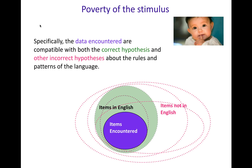Let's walk through what poverty of the stimulus is talking about. Consider these little circles as sets. You have the items that you actually encounter in your input, and then you're trying to generalize from those to figure out what are the actual set of items that are in English — not too small, and certainly not too big to include items that are not in English. And the poverty of the stimulus is talking about this exact problem.